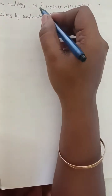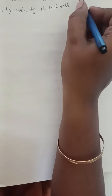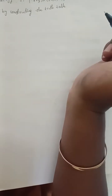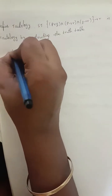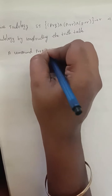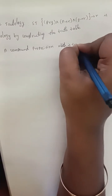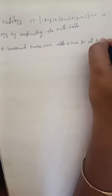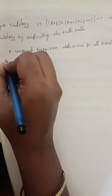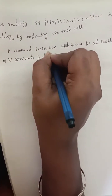Define tautology. Show that (P∨Q) → R and (P→R) ∧ (Q→R) is a tautology by constructing the truth table. First, what is tautology? A compound proposition which is true for all possible truth values of its components is called a tautology.